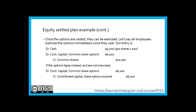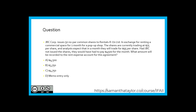Let's look at a question. JVC Corp issues 50 no-par common shares to Rentals Are Us Limited in exchange for renting a commercial space for one month for a pop-up job. These shares are currently trading at $75 per share, and analysts expect that in a month they will trade for $95 per share. Had JVC not issued shares, they would have had to pay $4,500 for the month. What will the amount be to record the rent expense account for this agreement? Would it be A) $4,500, B) $3,750, C) $4,750, or D) only a memo entry?